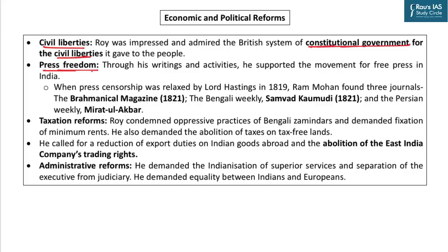Freedom of press was one basic component of civil liberties. When press censorship was relaxed during the time of Lord Hastings in 1819, Raja Ramohan Roy founded — remember for prelims — three journals: Brahmunical Magazine in 1821, Sambad Kaumudi, which is extremely important, and Mirat-ul-Akhbar, a Persian weekly. Raja Ramohan Roy was well versed in Bengali, Sanskrit, Persian, Arabic, and other languages including English.